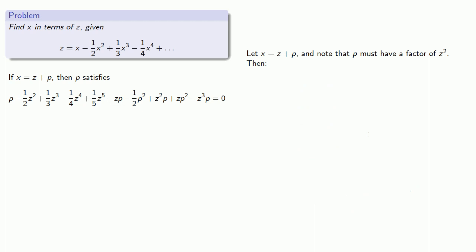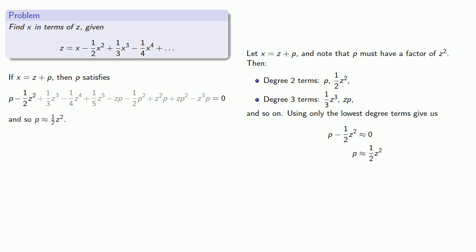So, again, we'll focus on the lowest degree terms. Again, since P includes a factor of Z squared, we have our degree two terms. That's P and one-half Z squared. And then terms like one-half Z to the third or ZP, well, those are degree three terms. And all the rest have even higher degrees. So, using only the lowest degree terms gives us P minus one-half Z squared is approximately zero. And so, P itself is approximately one-half Z squared.